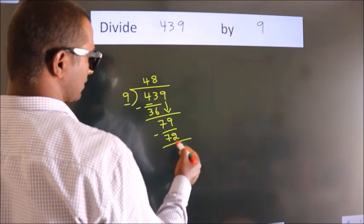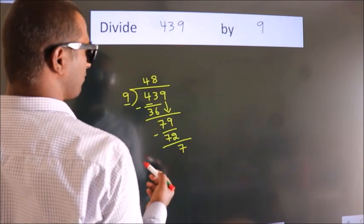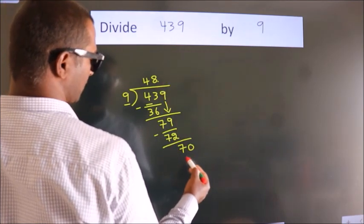After this, no more numbers to bring down. So what we do is put a dot and take 0.